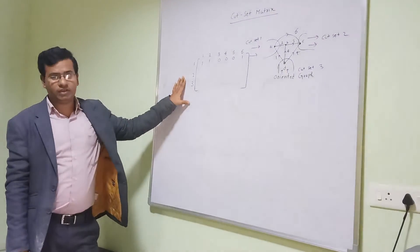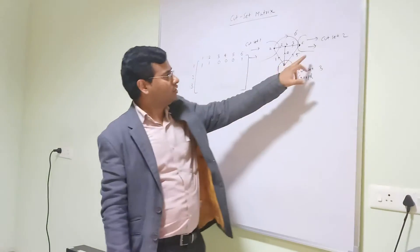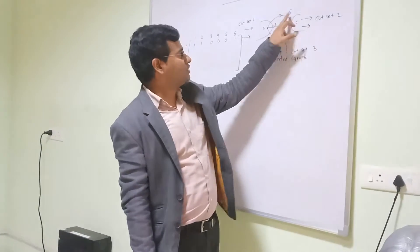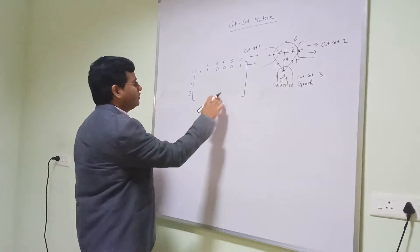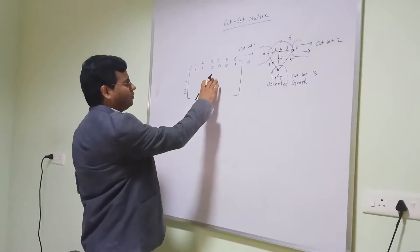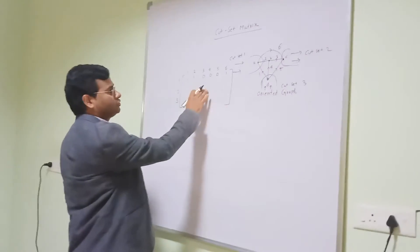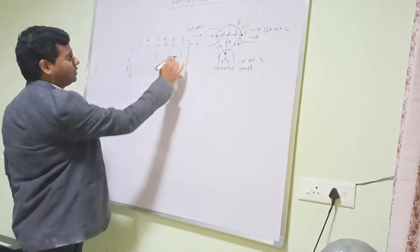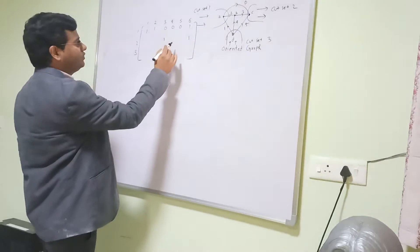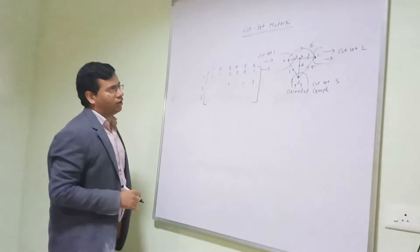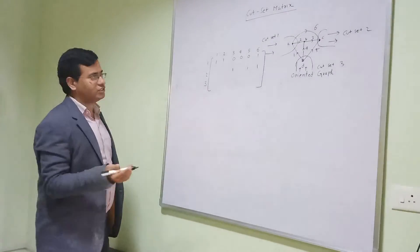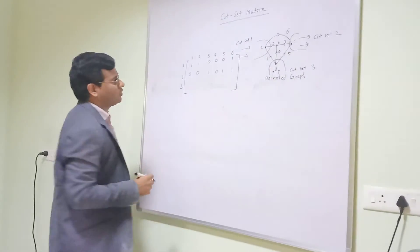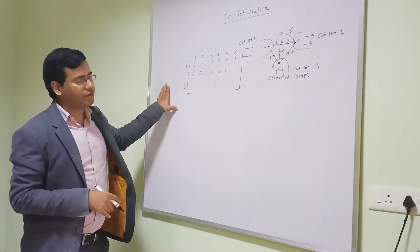In the same way we go to cut set 2. In cut set 2, the branches related are only 3, 6, and 5. So we fill in values only for branches 3, 6, and 5. Branch 3 is plus 1, branch 6 is also plus 1, and branch 5 is also plus 1. All the remaining branches are not related, so they are 0. Cut set 2 is now complete.